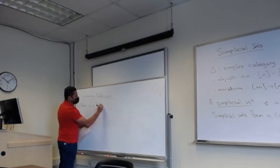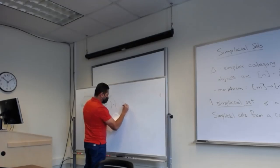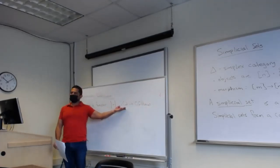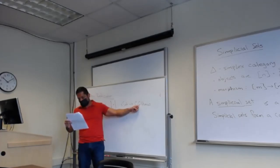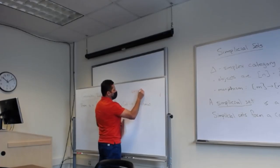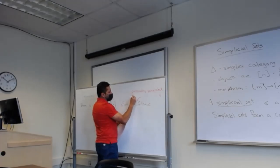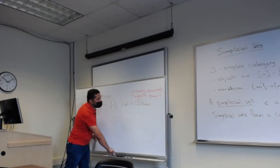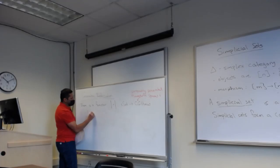Given a simplicial set, you can think of it as a space. There is a functor — let's call it geometric realization, written with two bars — that takes every simplicial set from the category of simplicial sets to the category of compactly generated Hausdorff spaces. I understand generated, I understand compact, but I'm not sure I understand them both together.